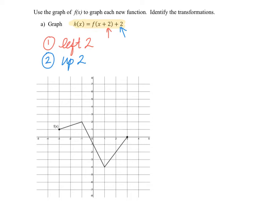If you want to do this one step at a time, take each coordinate on your graph and move them left 2. Starting with the left endpoint, shifting left 2 puts it at negative 5, 1. The maximum moves left 2 to negative 3, 2. Move the minimum and right endpoint left 2 as well, connect the dots, and the shape is identical to the original — just moved left 2. Then take all those coordinates and move them up 2. Many students can do both shifts at the same time. Always label your final answer as h of x.